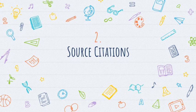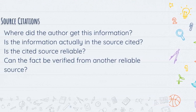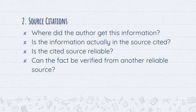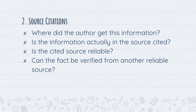Characteristic number two is source citations. Where did the author get this information? Is the information actually in the sources cited? Is the cited source reliable? Can the fact be verified from another reliable source? If we put all of these questions into one, the question would be: how reliable is the information presented in the article?